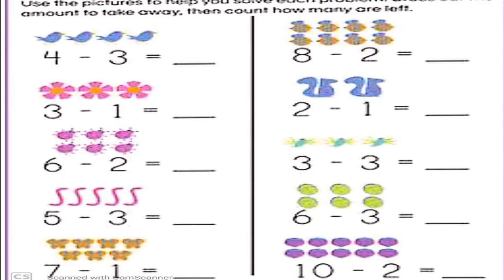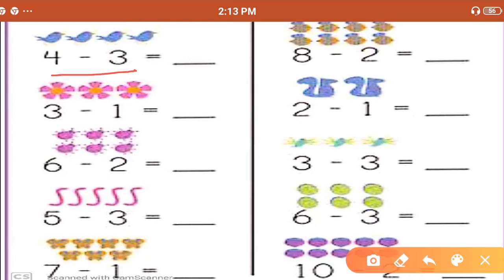Use the picture to solve the sums — count how many are left. As we did in the last exercise, follow the same trick here. This is 4 minus 3, and we have 4 objects. Let's cut 3 out: 1, 2, and 3. How many are remaining? It is 1. So, 4 minus 3, we get number 1. Next is 3 minus 1. We cut 1 among the 3 figures. How many remaining? It is 1 and 2. So, 3 minus 1 is equal to 2.